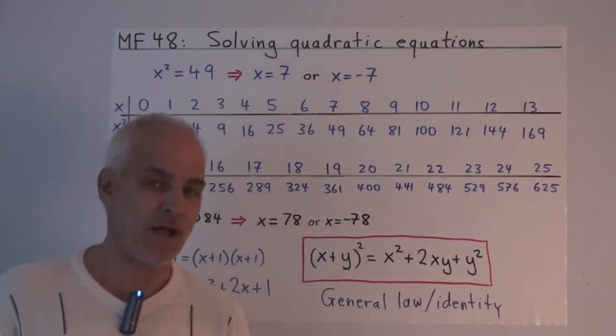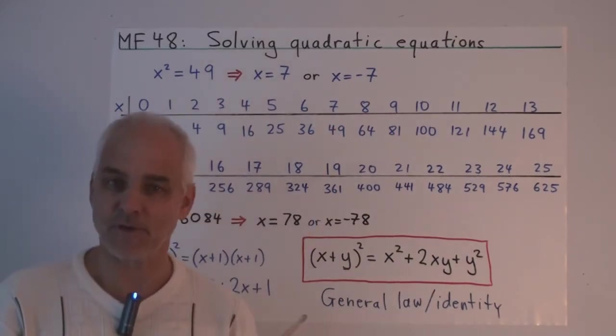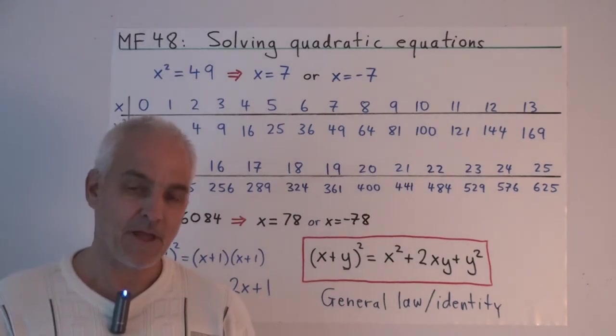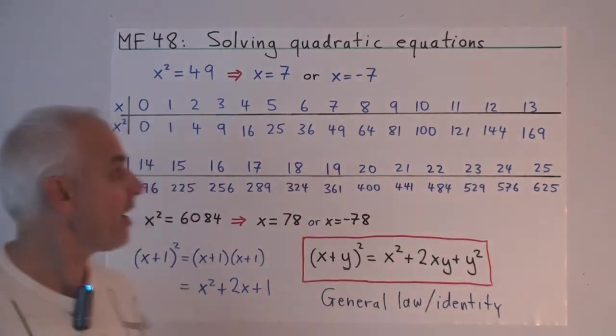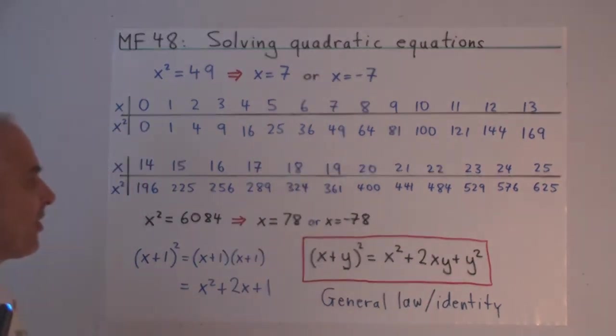But if you think about it for a little while, you'll also realize that minus 7 is also a solution because minus 7 times minus 7 is also 49. So if we're going to allow negative numbers, and we don't have to, but if we are going to, then there's actually two solutions. x equals 7 and x equals minus 7.